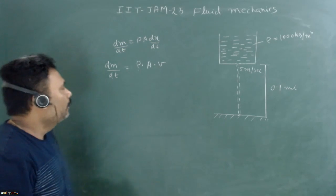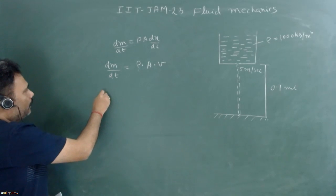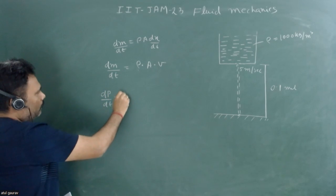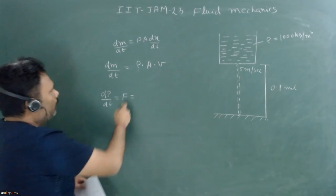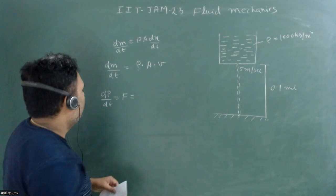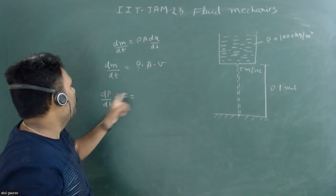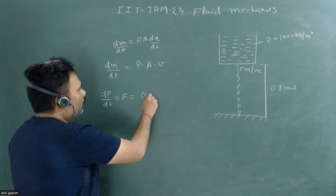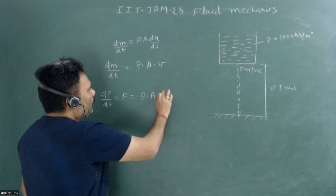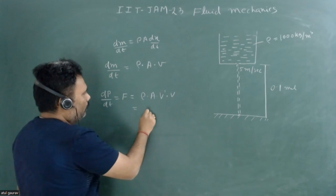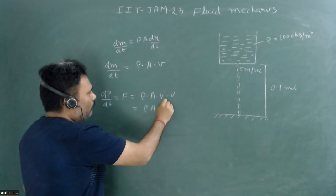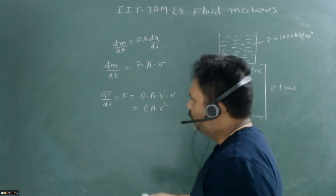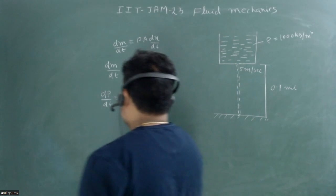Once we calculate the rate of mass flow, we can find the rate of flow of momentum. dp/dt is equal to force. When we multiply by velocity, we get dp/dt which is force = ρ × area × v × v × v, so that value equals ρ × area × v².